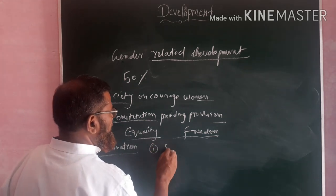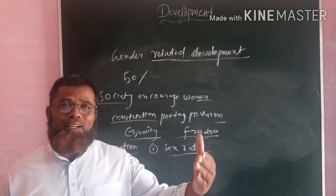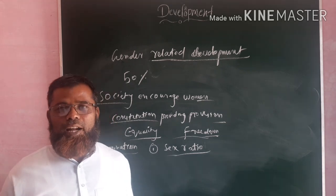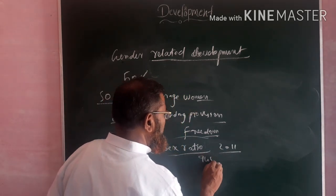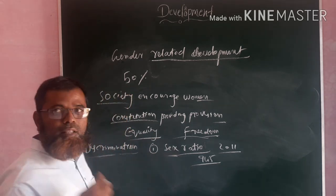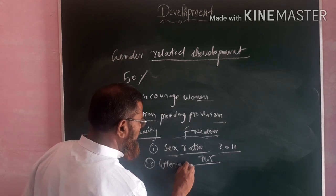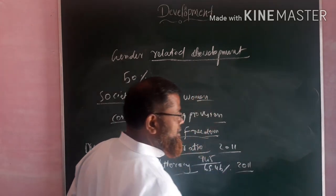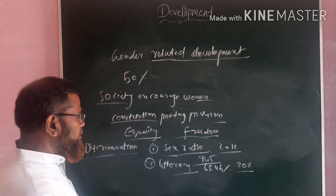Even having these facilities, women are still facing the problem of discrimination. The first indicator is the sex ratio: the woman population is less when we compare to the men population, because people give more importance to the boy child than the girl child. According to the 2011 census, for every 1,000 men, the ratio of women is 945 — meaning a shortage of 65. Literacy is another issue: only 65.46 percent of women are literate according to the 2011 census, compared to more than 80 percent for men.